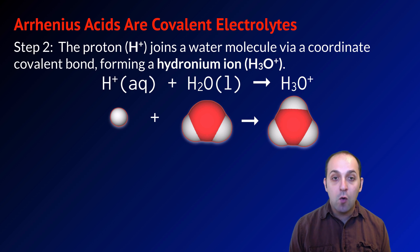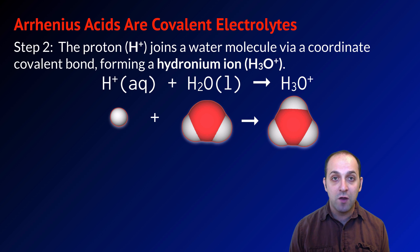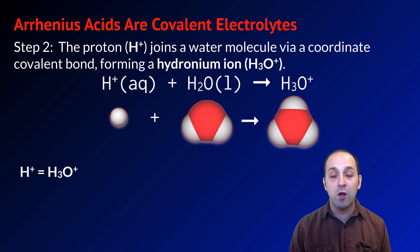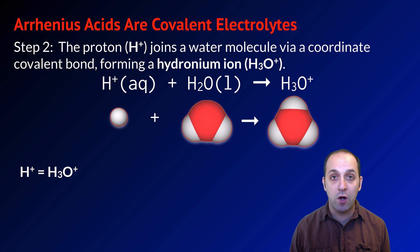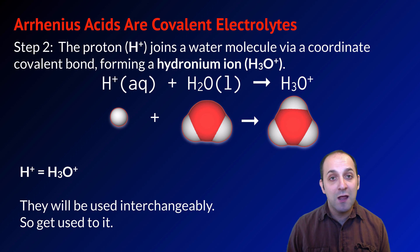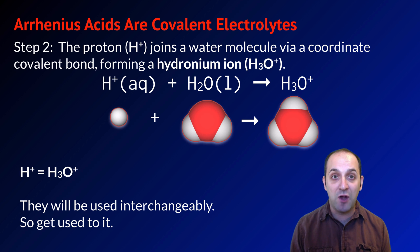We go from H₂O plus the proton to produce H₃O⁺. The key point to understand is that in water, the concentration of H⁺ is equal to the concentration of H₃O⁺. Protons do not exist by themselves in water — they're always attached to water molecules via coordinate covalent bonds. H⁺ and H₃O⁺ are used interchangeably, and in aqueous solutions they refer to the same thing.